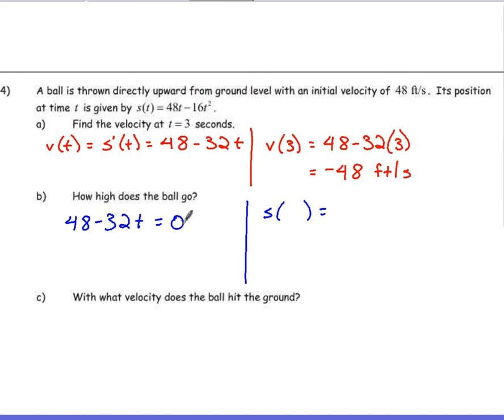Because when this ball reaches its highest point, it needs to change direction, so it's going to stop. It's going to change direction, velocity 0. If you solve this for t, well, let's see here. If I divide negative 32 over to negative 48, we're going to get 1.5. So 1.5 seconds.